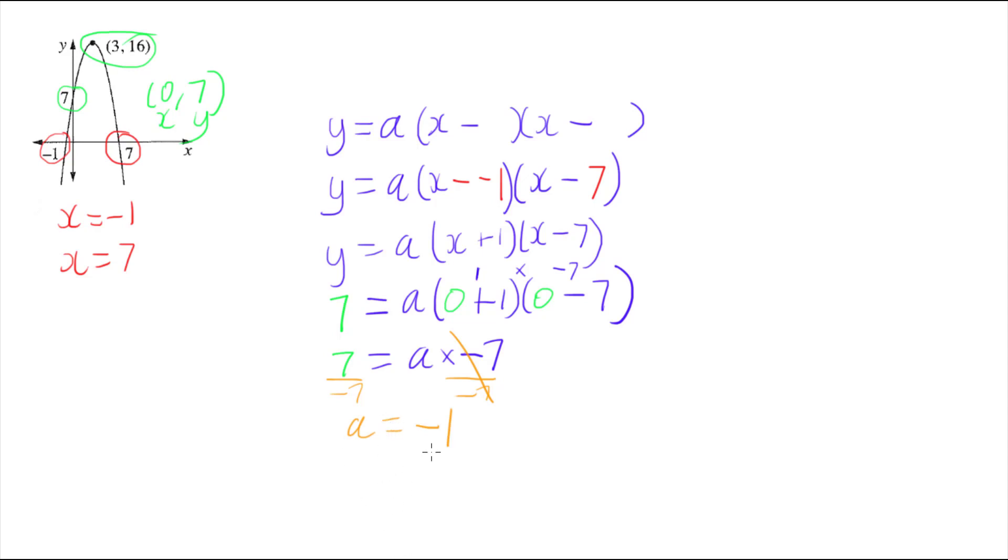So I can now finally write my final equation, putting all my numbers together. So I have y equals my a value, so my a value of negative 1 times my rest of it, which was x plus 1 times x minus 7. And there we have it, we have the final equation, which is the equation of that parabola.